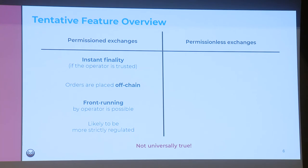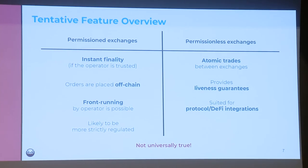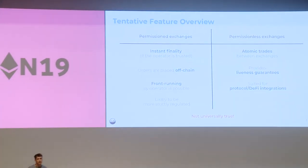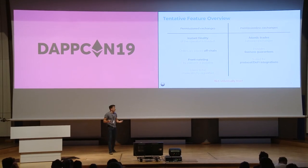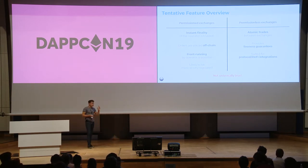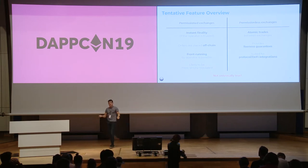For permissionless exchanges, the first cool feature is atomic trades. If I send a transaction to the blockchain that makes a trade on one DEX and then another, I can encode it so either both trades execute or neither does — very powerful for making risk-free related trades. Additionally, permissionless exchanges provide liveness guarantees. If you build a protocol on top of such an exchange, you have the guarantee that it won't be shut down tomorrow — these protocols really live on the blockchain and will always be available.